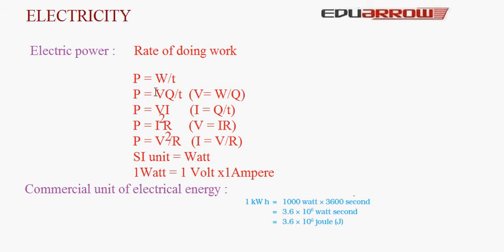The SI unit of power is the Watt. 1 Watt is equal to 1 Volt times 1 Ampere, or 1 Volt-Ampere. Commercially, we use a bigger unit of energy: the Kilowatt-hour. 1 Kilowatt-hour equals 1000 Watts times 1 hour, which equals 3.6 × 10⁶ Watt-seconds, or 3.6 × 10⁶ Joules.